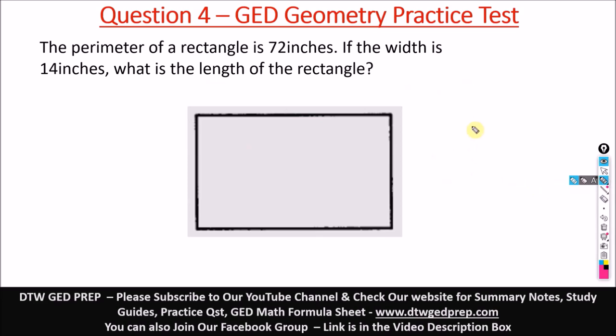Number four says the perimeter of a rectangle is 72 inches. If the width is 14 inches, what is the length of the rectangle? So the width is 14 inches.